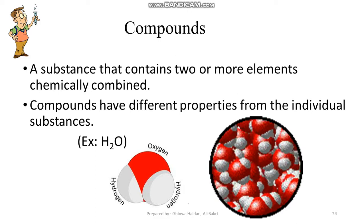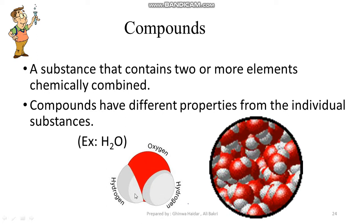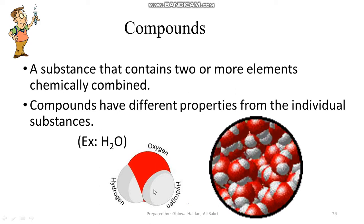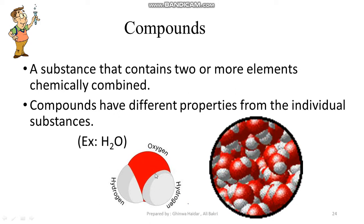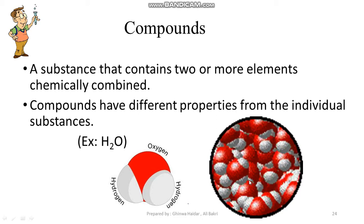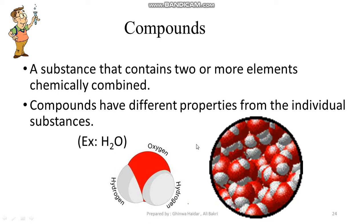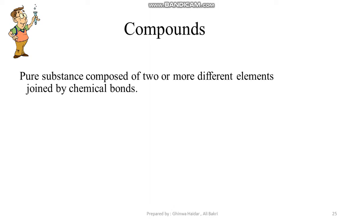The compounds have different properties from the individual substances. If we look at the water compound H2O, one is oxygen and two is hydrogen. If you look here in the picture, all water compounds are like this. If we have a lot of water, it will be like this. We will see different colors representing the different elements, because we have two different elements.